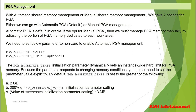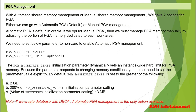You do not need to set the pga_aggregate_limit value explicitly. By default, PGA aggregate limit is set to the greater of the following: 2GB, 200% of the pga_aggregate_target initialization parameter setting, or the value of the processes initialization parameter multiplied by 3MB. Please note: if we create a database with DBCA, Automatic PGA management is the only option available.